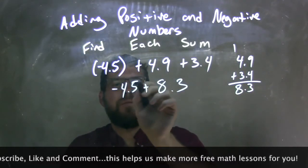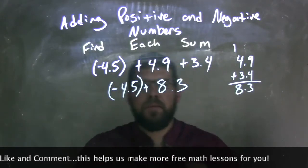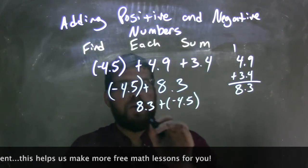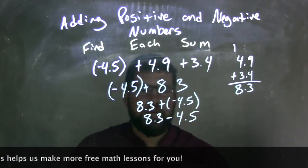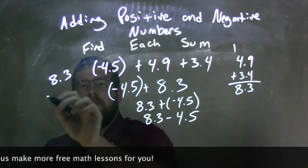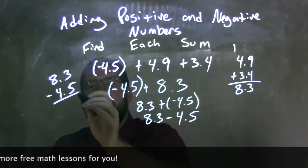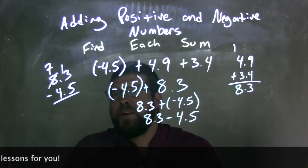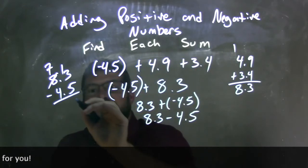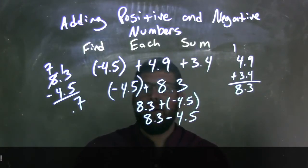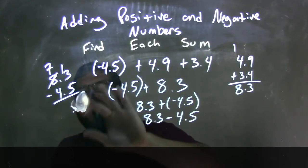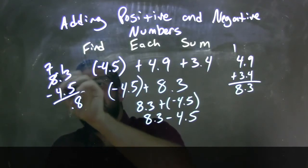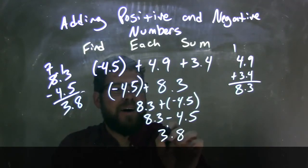I bring down the negative 4.5. By the commutative property I flip these to get 8.3 plus a negative 4.5. Adding a negative is the same as subtraction, so 8.3 minus 4.5. The 3 is smaller than 5, so I make the 8 a 7 and carry a 1: 13 minus 5 is 8, and 7 minus 4 is 3. My final answer is 3.8.